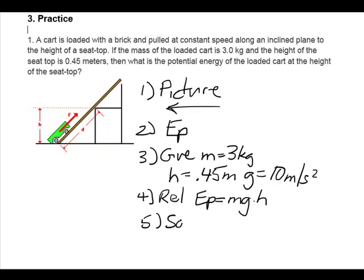To solve, let's put our numbers in. Our gravitational potential energy is the mass of our cart, 3 kilograms, times acceleration due to gravity, 10 meters per second squared.